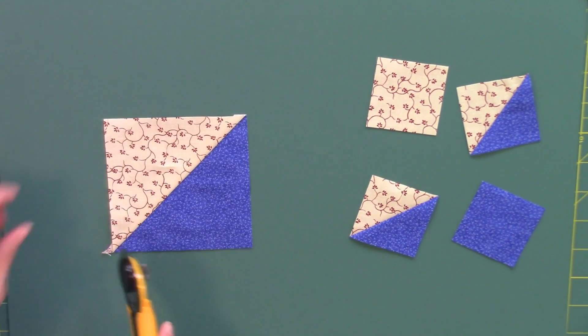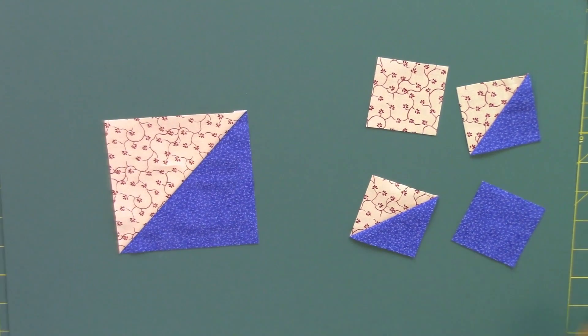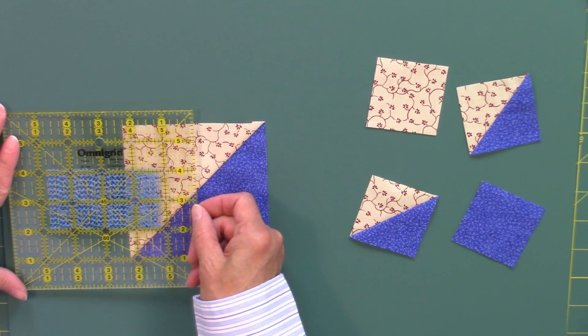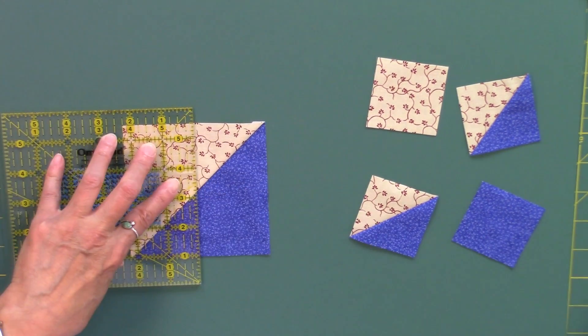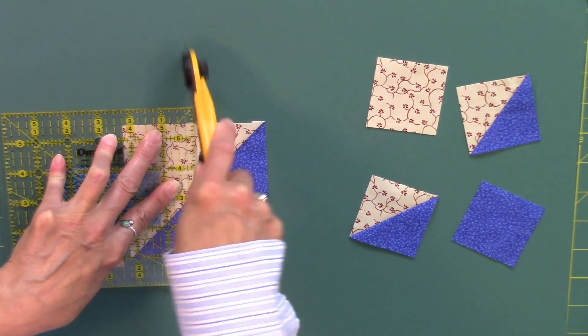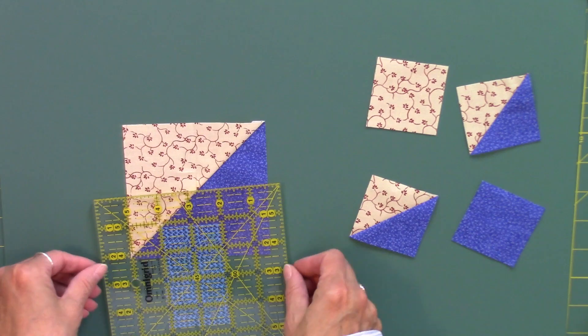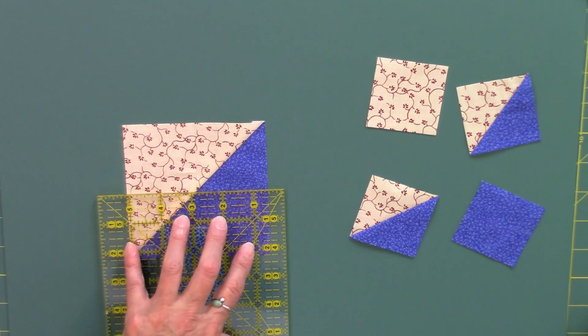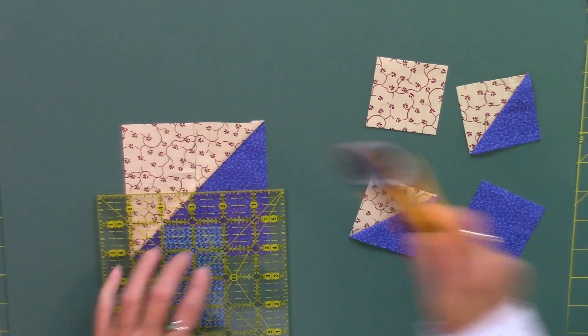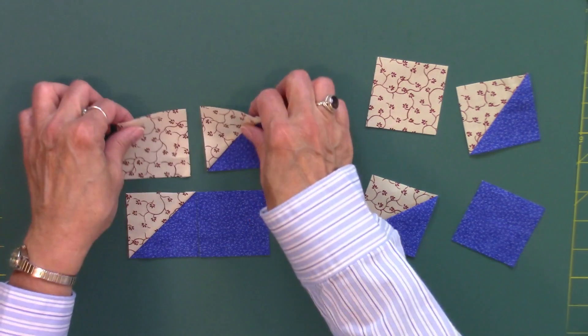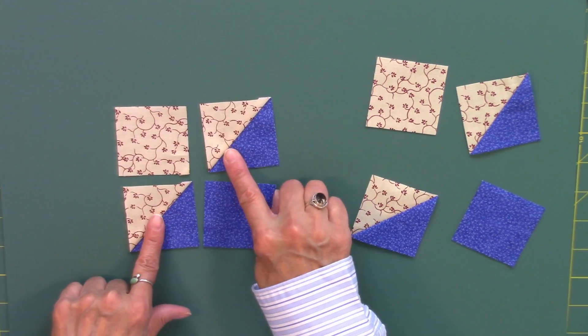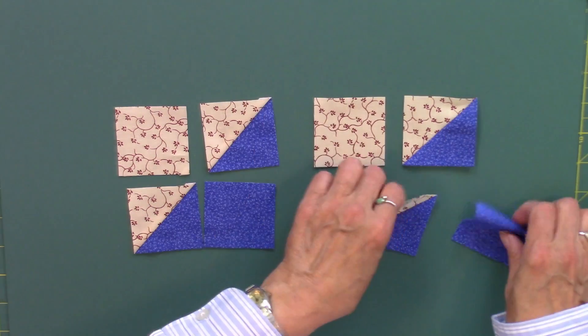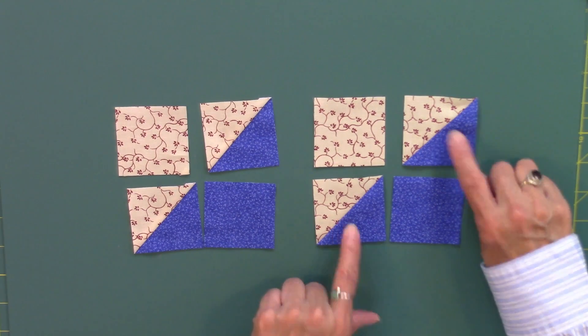And then it also is going to get sub cut. Remember two and a quarter inches in each direction. Cut two and a quarter, turn the ruler and two and a quarter inches in this direction. So now I have the units over here that have been pressed to the light and this set of units, these little half square triangles have been pressed to the dark.